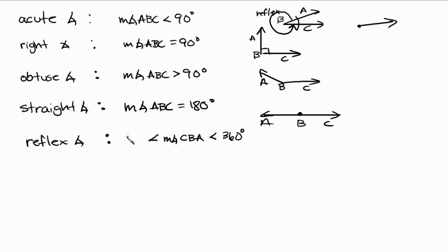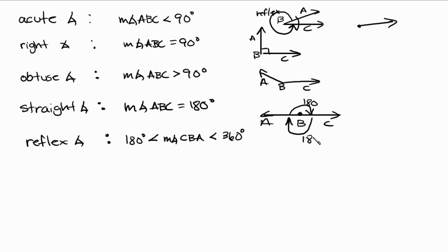The measure of angle CBA is also greater than 180 degrees. The reason why is because if it was 180 degrees, the reflex angle would be the other side, which is also 180 degrees — so there's no need to mention that. And if it was 360 degrees, it'd be the same ray you start off with.